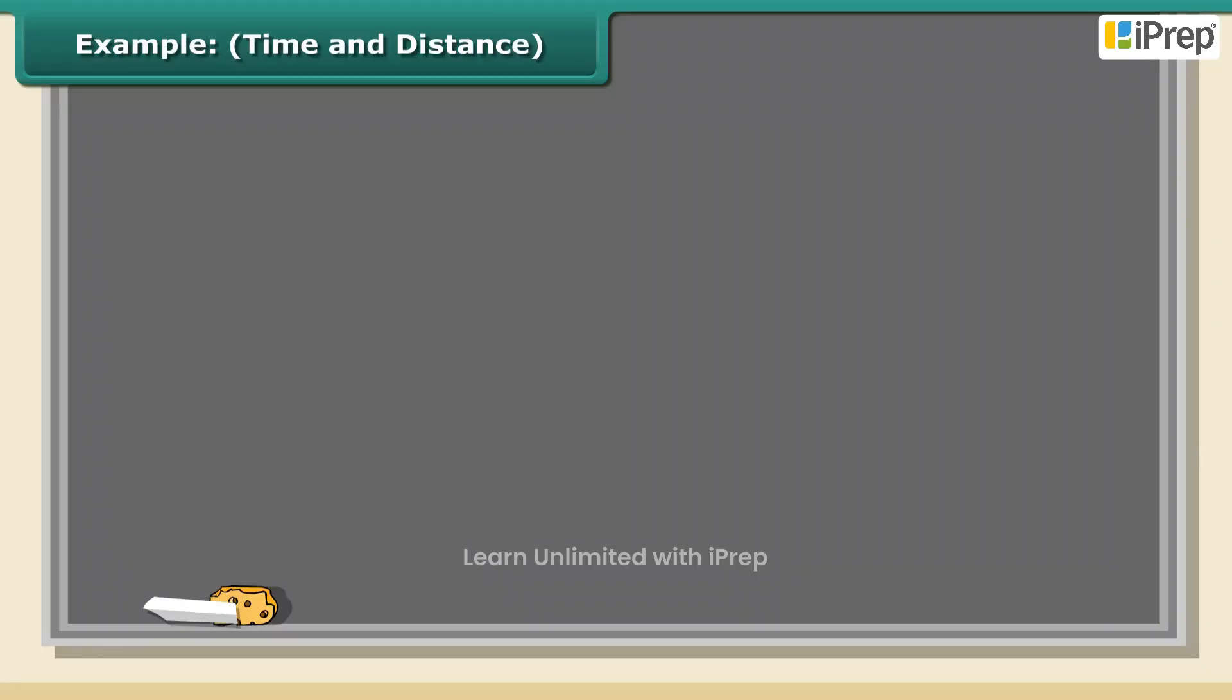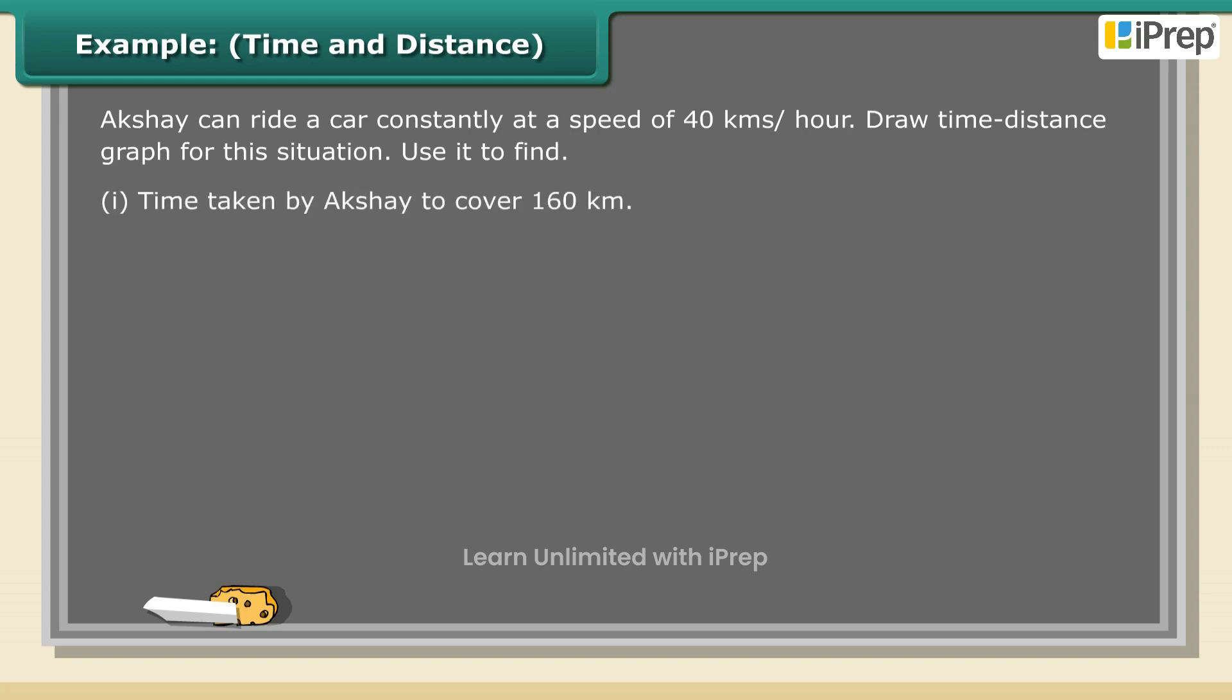Example: Time and Distance. Akshay can ride a car constantly at a speed of 40 kilometers per hour. Draw a time-distance graph for this situation. Use it to find: (1) Time taken by Akshay to cover 160 kilometers. (2) The distance covered by Akshay in two and a half hours.